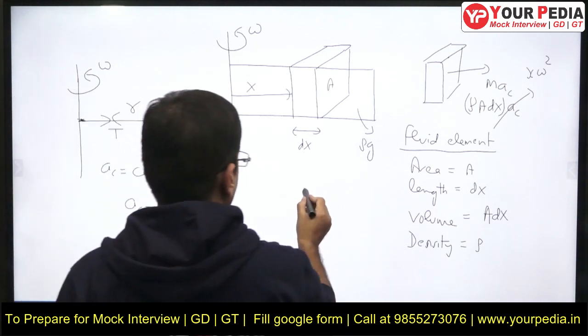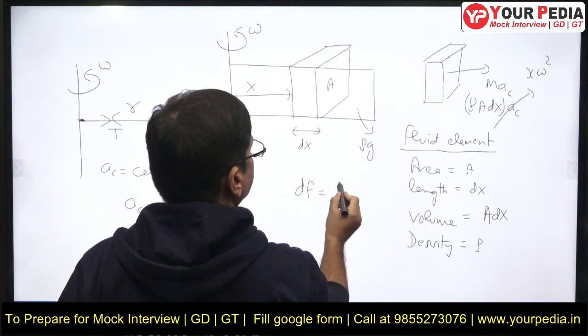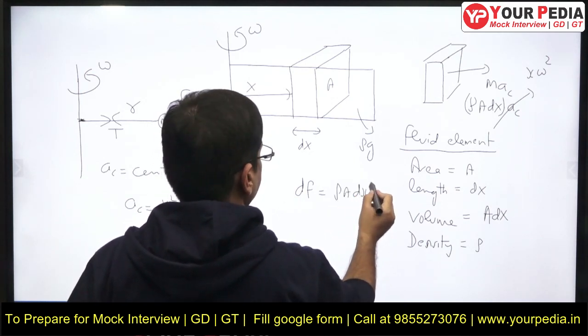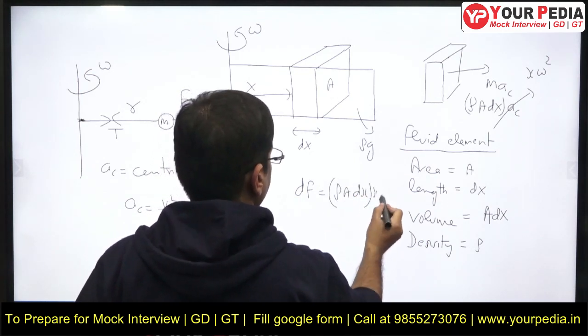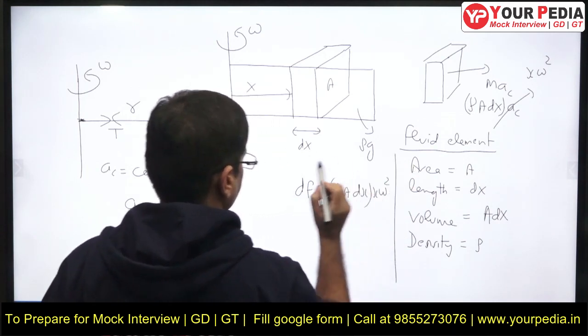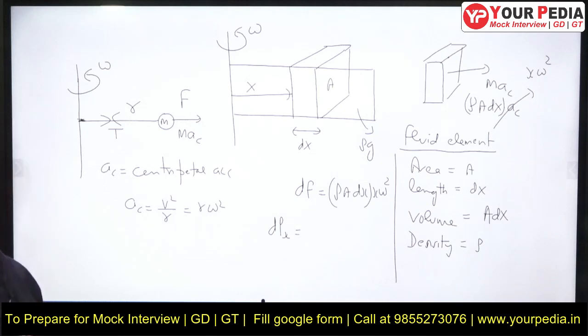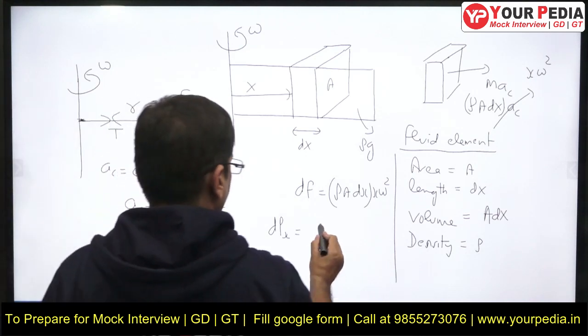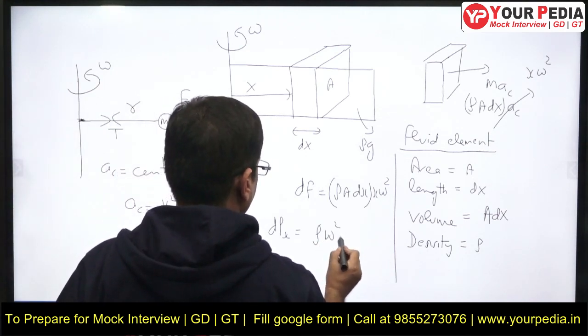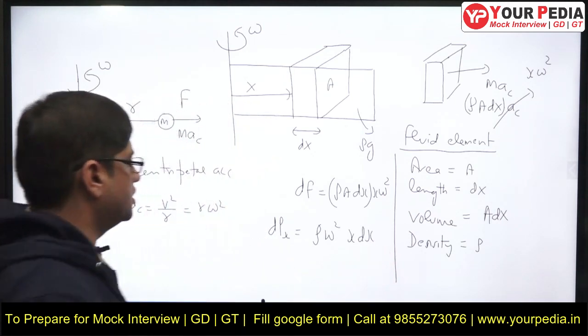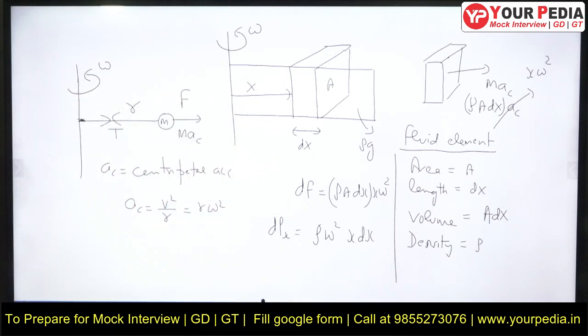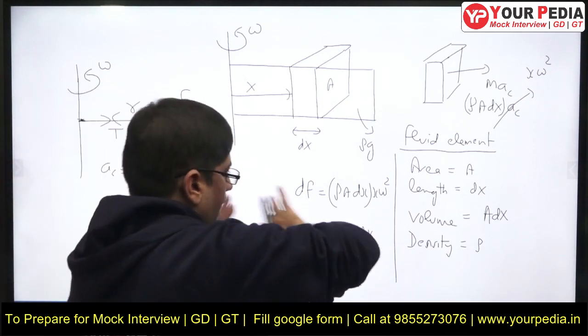Let us call it dF: rho A dx into X omega squared. What is the pressure acting at this fluid element? Because it is a fluid, we talk about pressure. What is the pressure acting there? Force per unit area. Okay, rho omega squared X dx. Can I write it like this? Divided by area: rho omega squared X dx.